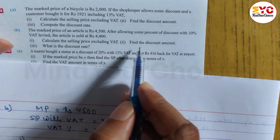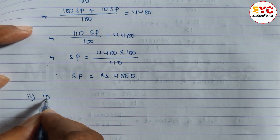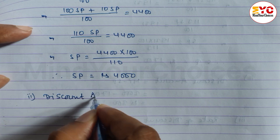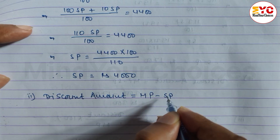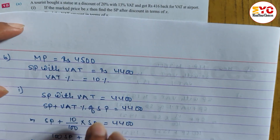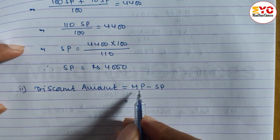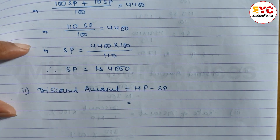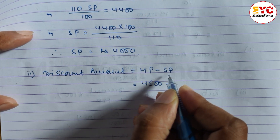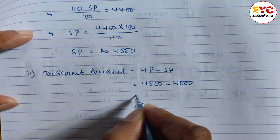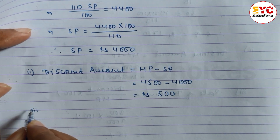Question number 2: find the discount amount. The formula is Discount = MP − SP. MP is 4500 and SP is 4000, so 4500 − 4000 = 500. The discount amount is Rs. 500.